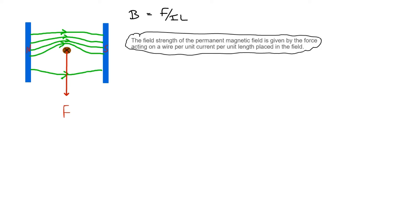We should note the units again. B is measured in Teslas, as defined previously. But we can now see that a Tesla is also a Newton per amp per metre. We can rearrange this equation as F equals BIL — quite well known and easy to remember. So the magnetic field strength times the current in the wire times the length of wire in the field gives the force.